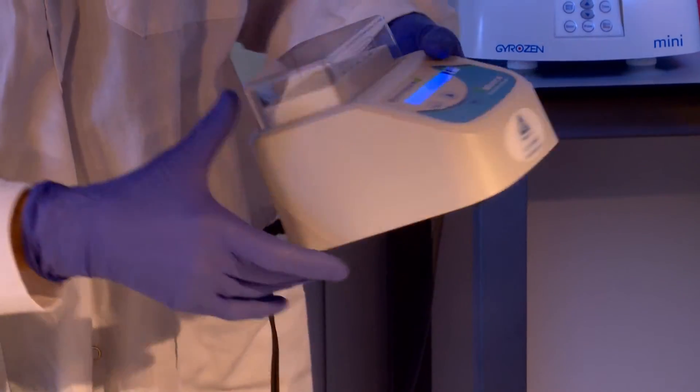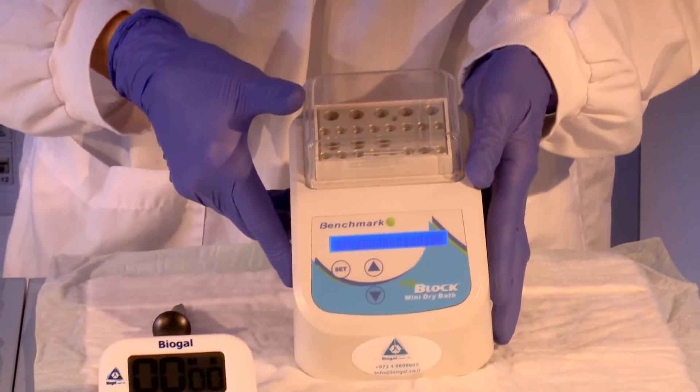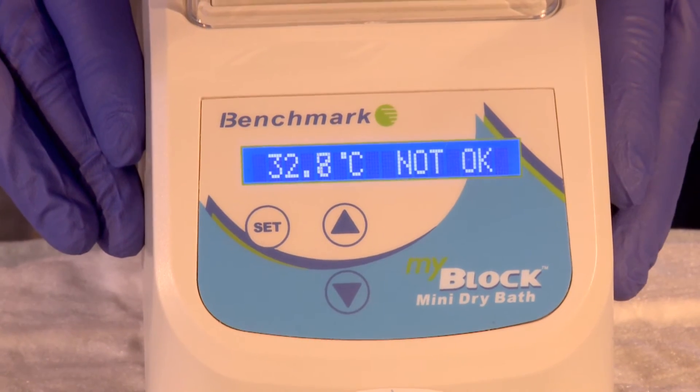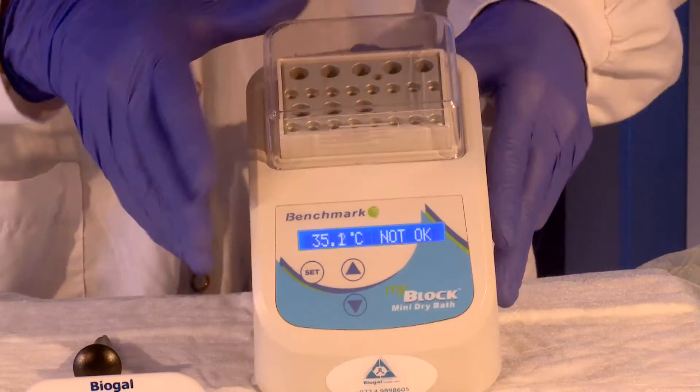Turn on the heat block and adjust the temperature to 95 degrees centigrade. When the target temperature has been reached, you can begin the DNA extraction process.